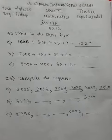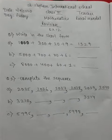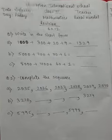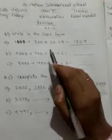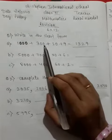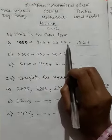Hello students, today's question is write in the short form. So first is 1000 plus 300 plus 20 plus 9.